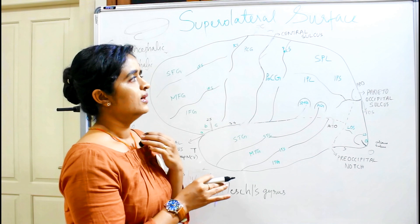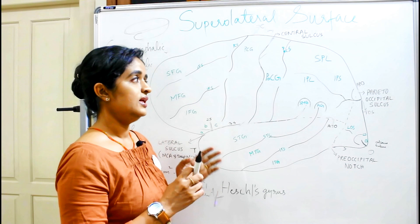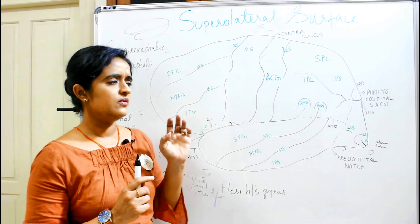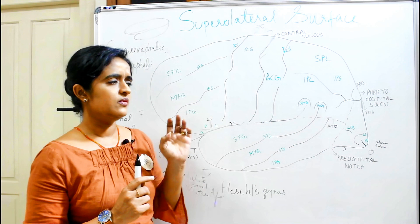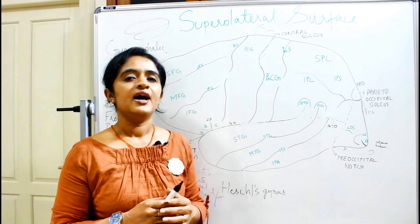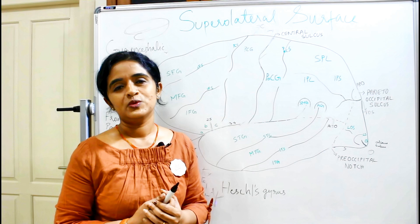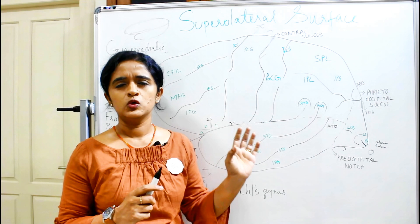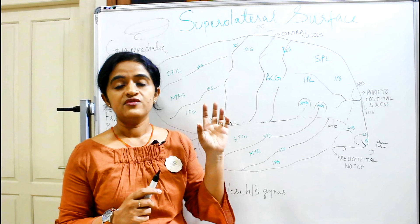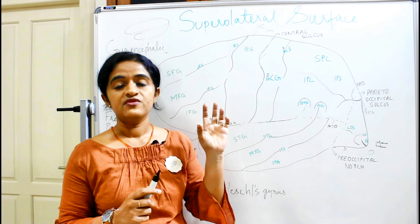The importance of subdividing the lobes further is that it is the easiest way to locate the functional areas. That is why I decided to divide the lobes first before explaining the functional areas — otherwise it would be difficult to understand the different regions when discussing functional areas.